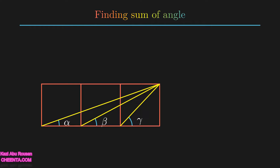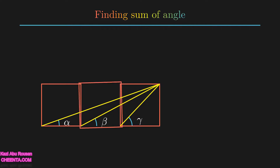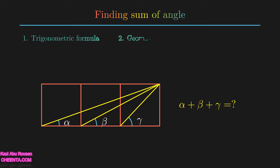Today we will be discussing this particular problem. We have three squares, each with a side length of unity. The problem asks you to find the sum of three angles: alpha, beta, and gamma. This problem can be solved in many ways; the three basic ones are using trigonometric formulas, construction and angle chasing, and complex numbers.